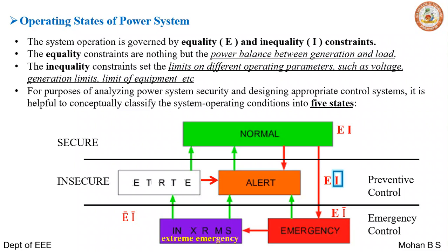From the extreme emergency state, emergency control actions must be taken; otherwise the system will have contingency effects, cascading effects, and a larger blackout. If control actions are taken, the system moves to the restorative state, where the system is still insecure. In restorative state, the system has not yet reached normal and still has shortfalls with respect to imbalance between generation and load. Once these problems are addressed by preventive control actions, the system moves to normal state.